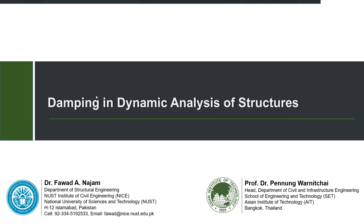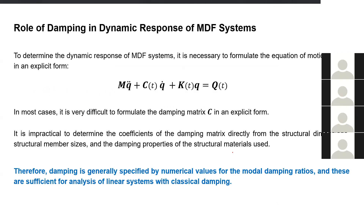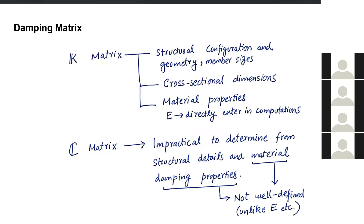Let's continue with the damping discussion and then I will go to ETABS to show you some of the options. We know already that we have this equation of motion — the complete equation with damping — and it can be non-linear or linear. The K matrix can be formulated from structural elements, their geometry, materials, and other properties. But the C matrix cannot be directly formulated; we have to have a model for C matrix in order to construct it.